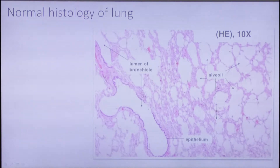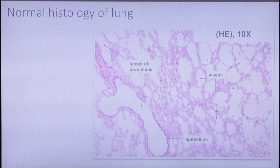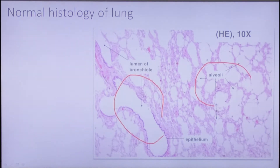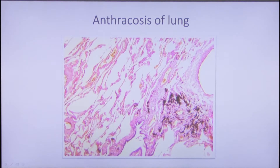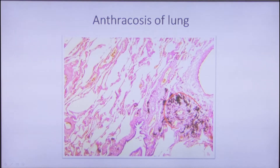First of all, we start from normal histology, because it's impossible to understand pathological processes without knowledge of normal histology. This is how a healthy lung looks like — we see here alveoli and the lumen of bronchioli. Here we see a mostly normal lung but with the presence of carbon particles. This is not necessarily a pathological condition; it happens often due to urban living.